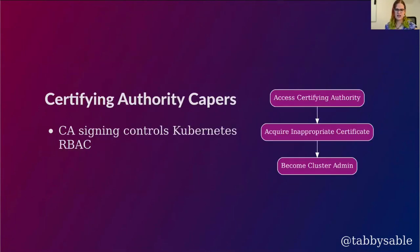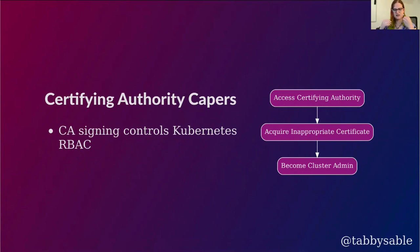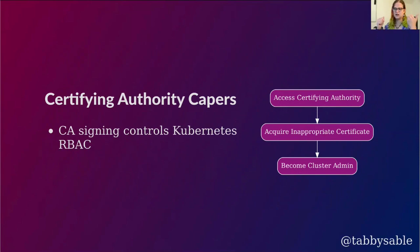With that all taken care of, let's hop in and actually hack some clusters. The first situation is based on the idea that your certifying authority controls the issuance of credentials for your Kubernetes cluster. No matter how sophisticated your RBAC configuration may be, if your certifying authority is too free in who it issues certificates to, you may have a vulnerability. We're going to access our certifying authority, acquire a certificate inappropriately, and use that to become cluster admin.